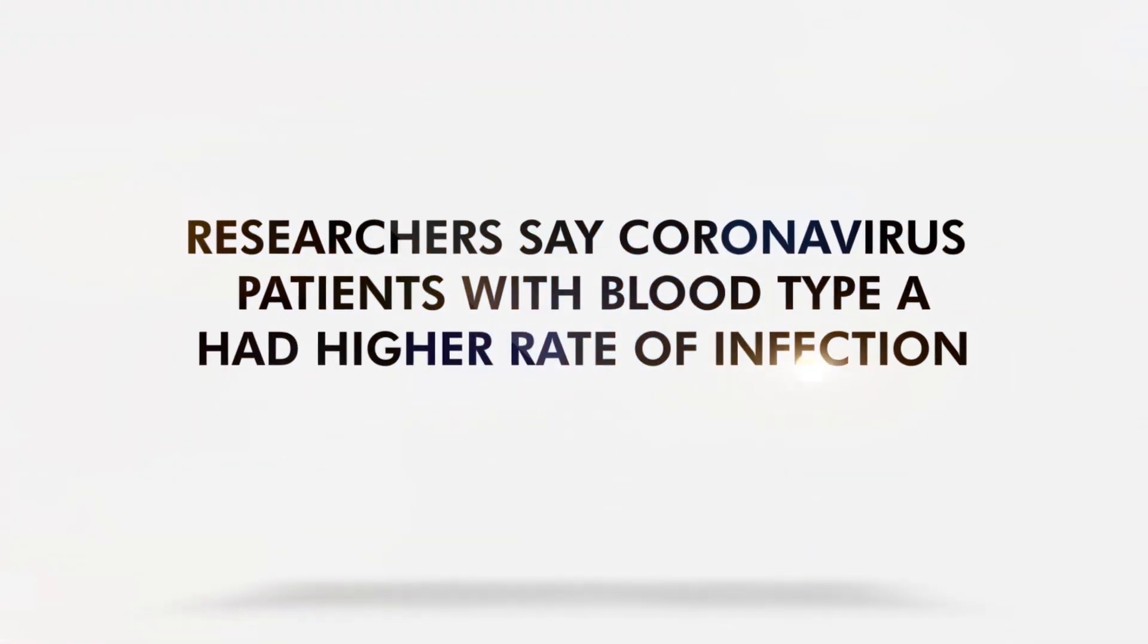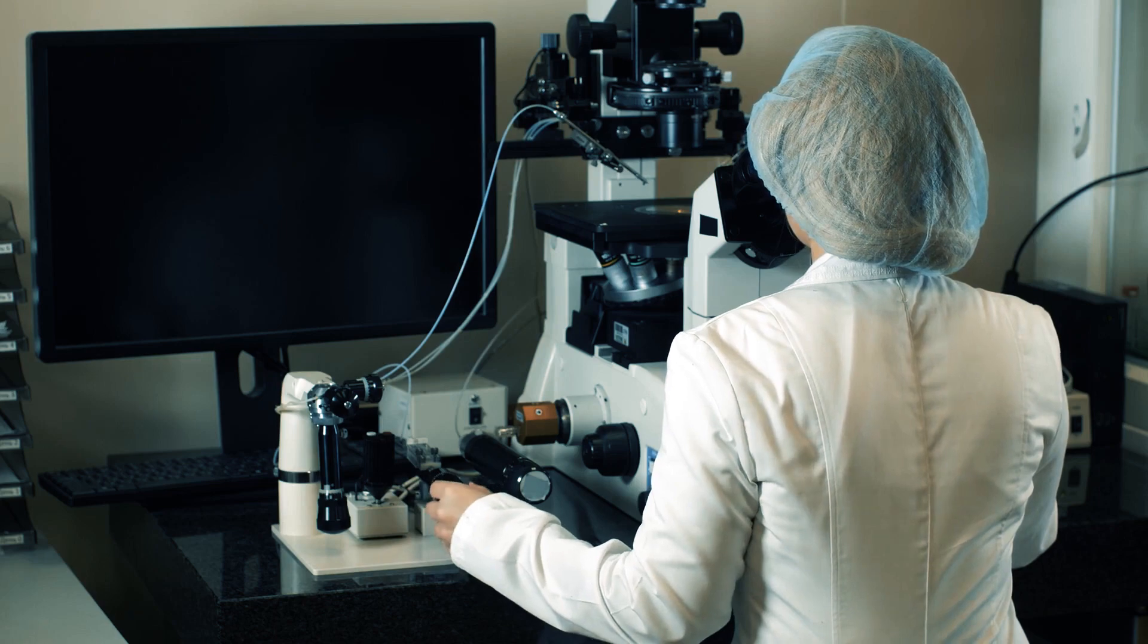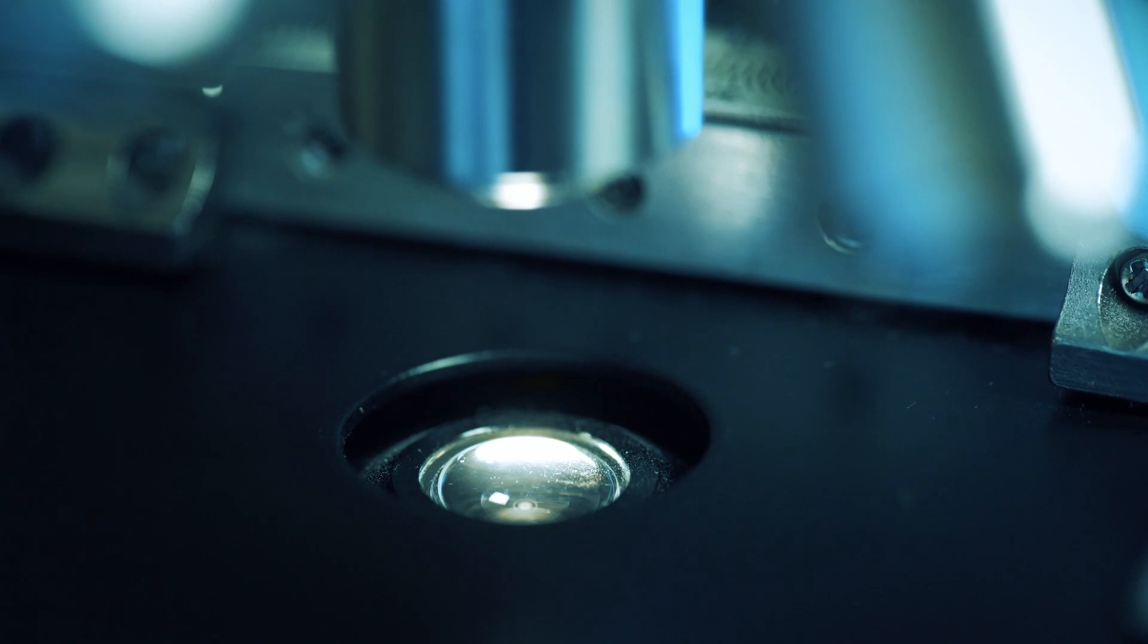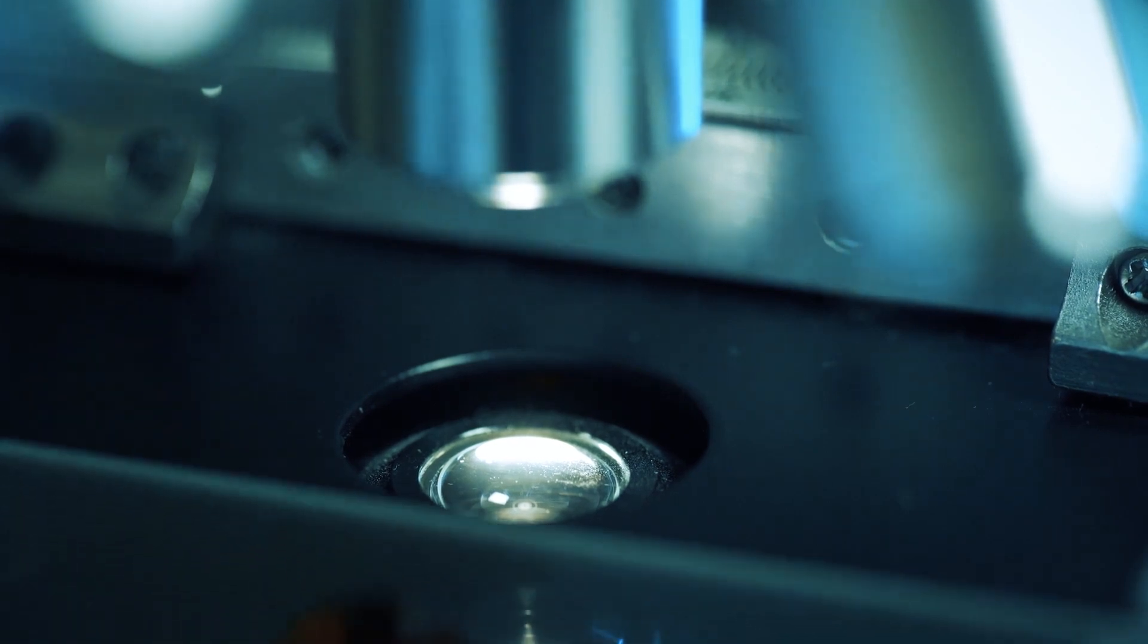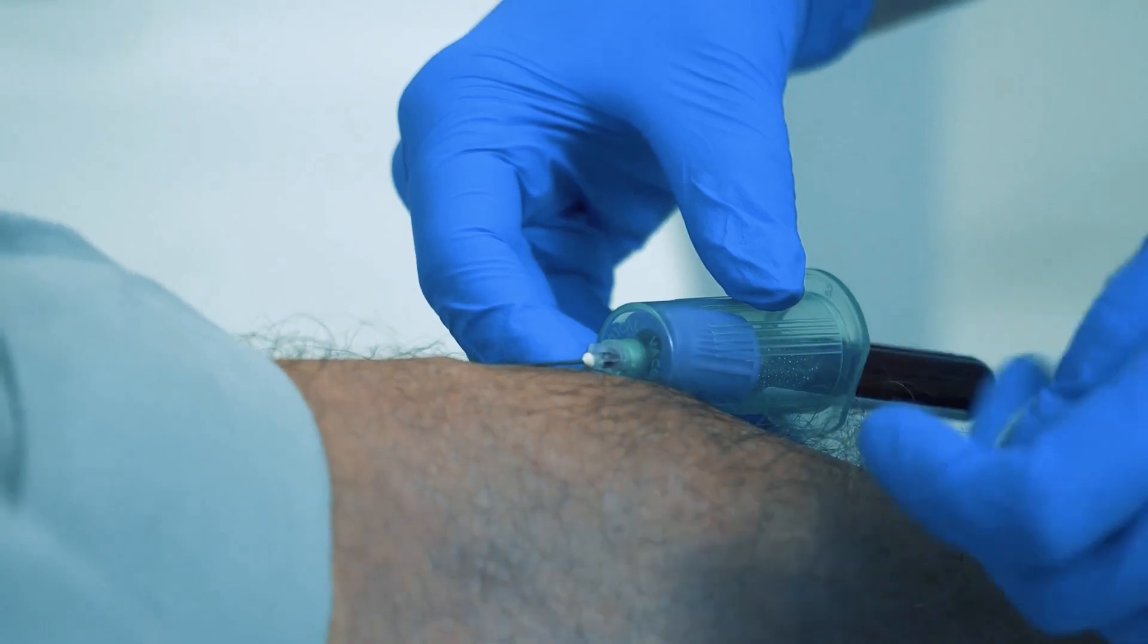Medical researchers in China have found that coronavirus patients with blood type A had a higher rate of infection and may be more vulnerable to the novel coronavirus. They also found that people with blood type O may be more resistant to it.